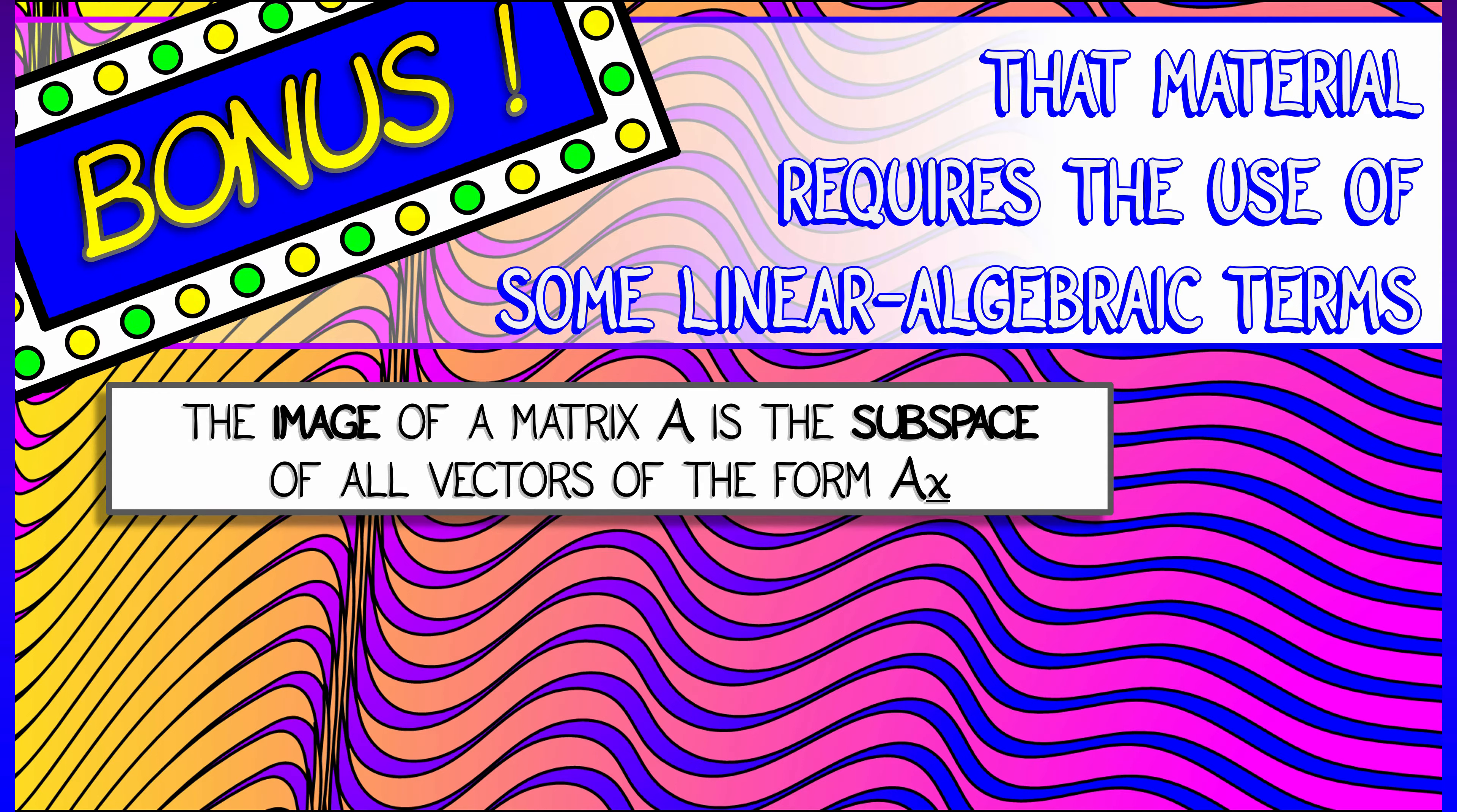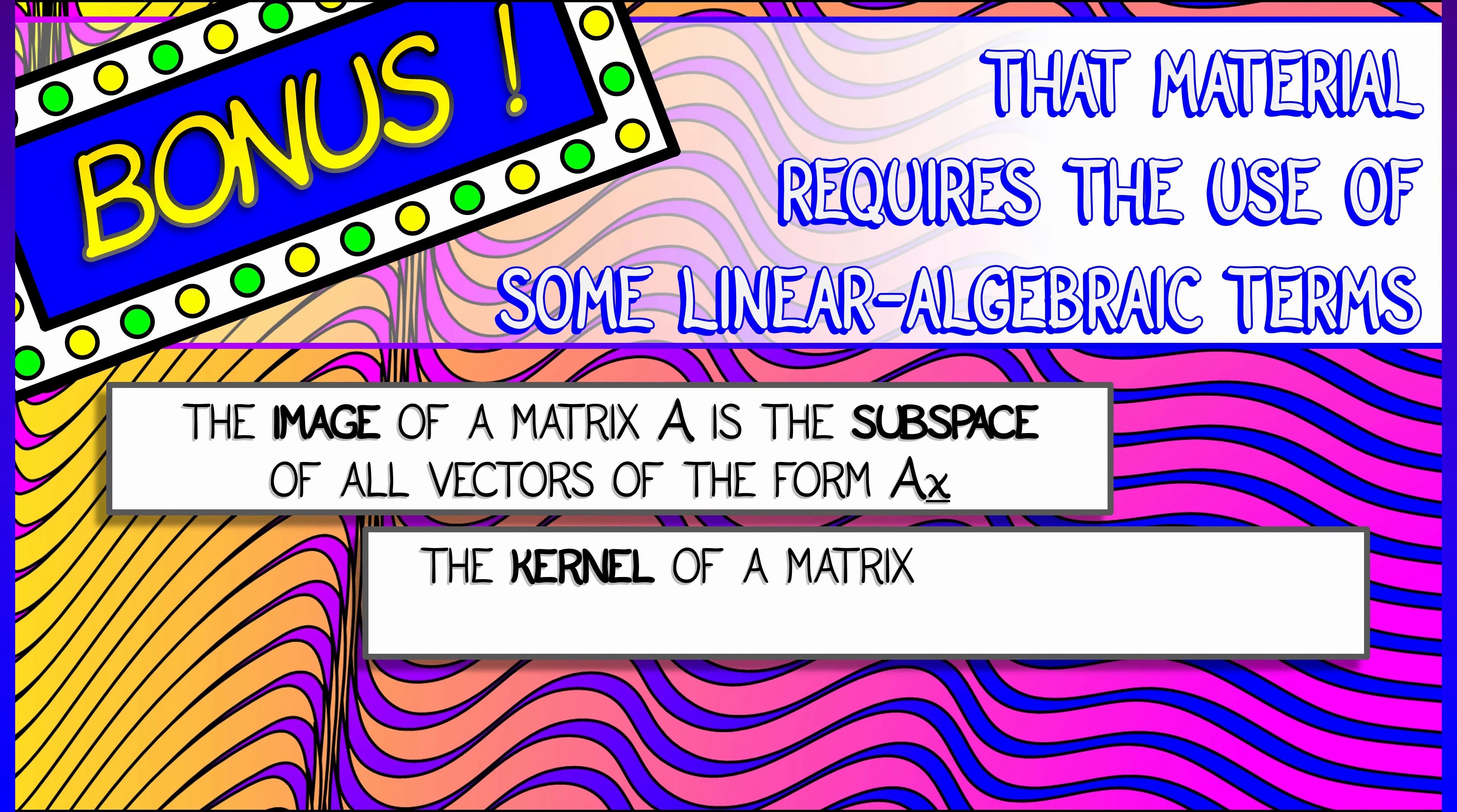Here's a definition. The image of a matrix A is the set, or rather subspace, of all vectors of the form A times X for all possible input vectors X. So anything that you get as an output, that's the image.